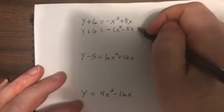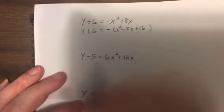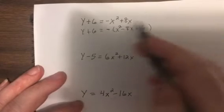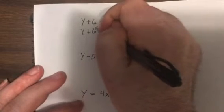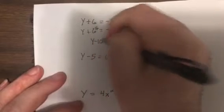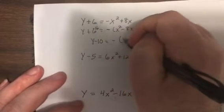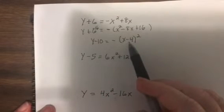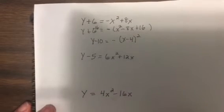Half of 8 is 4, 4 squared is 16. But I didn't really add 16, I really added negative 16. So I've got to subtract 16 from this side. Now, if I wanted to graph this thing, I would have it set up perfectly. The vertex is 4, 10, and go from there.